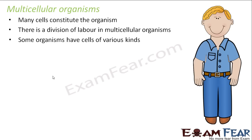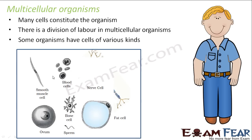The best example is human beings. Just look at the variety of cells: we have smooth muscle cells, blood cells, nerve cells, fat cells, and bone cells. Their appearances are also different — a bone cell has a flowery structure, which is very different from the appearance of a blood cell or a smooth muscle cell. Each of these cells has a specific function to perform; the function of a bone cell and a blood cell are not the same.